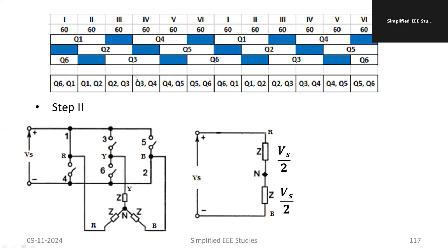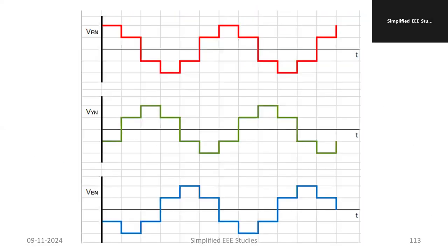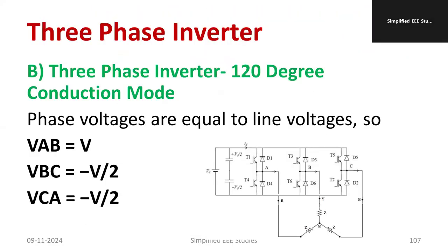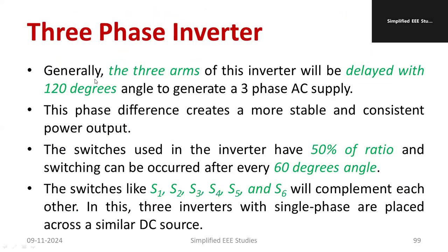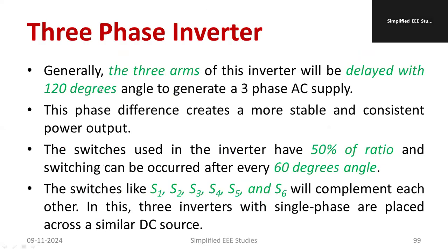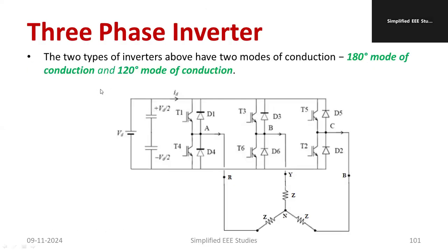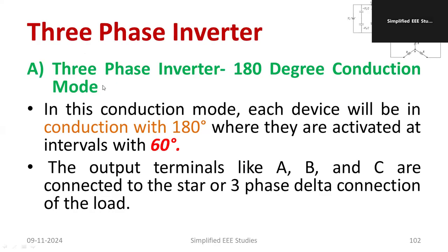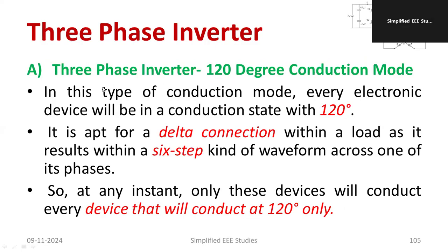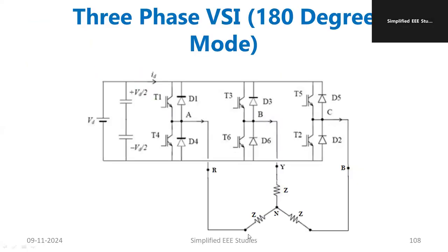I will now conclude the session on the three-phase inverter. You can go through the equations — they will be helpful. Let me know if you have any queries. To summarize: in this session I discussed what a three-phase inverter is, the two important modes of operation, the circuit diagram, the basic working, and the mathematical equations. If you have any queries, ask through the comment box. Thank you for watching. Happy learning!